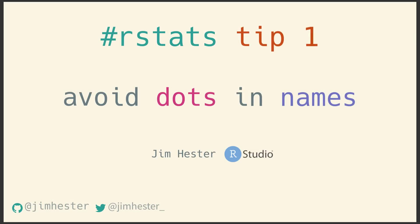Naming variables and functions is something that every R user wrestles with. As a result, there are a number of conventions that have arisen in the RStats community, among them DotCase, CamelCase, and SnakeCase. You might think that which of these you use is largely personal preference, and that's true for the most part. However, one of these, DotCase, has serious technical drawbacks due to the way S3 Dispatch works in the R language. As a result, RStats tip number one is: avoid dots in your names.